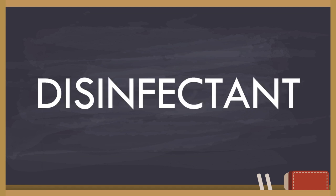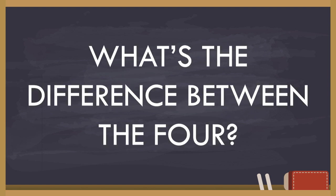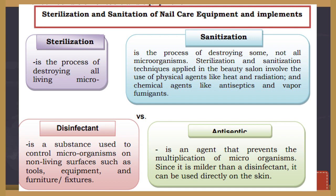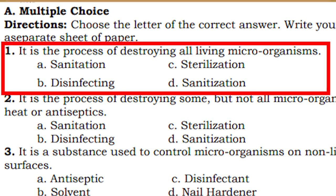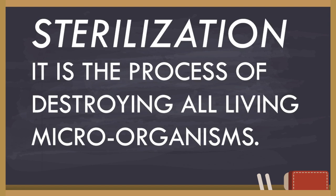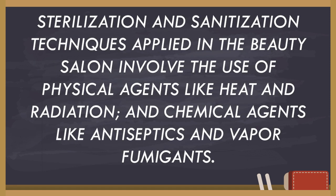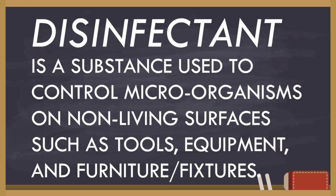Sterilization, sanitization, disinfectant, and antiseptic — what's the difference between the four? Sterilization is the process of destroying all living microorganisms, while sanitization is the process of destroying some but not all microorganisms. Sterilization and sanitization techniques applied in a beauty salon involve the use of physical agents like heat and radiation, and chemical agents like antiseptics and vapor fumigants. Disinfectant, however, is a substance used to control microorganisms on non-living surfaces such as tools, equipment, furniture, or fixtures.